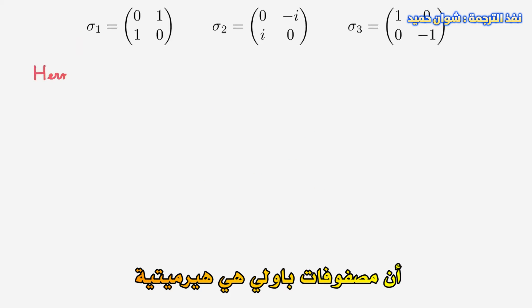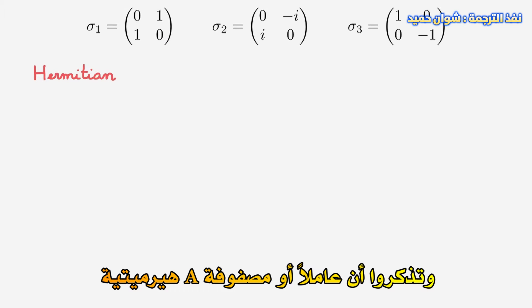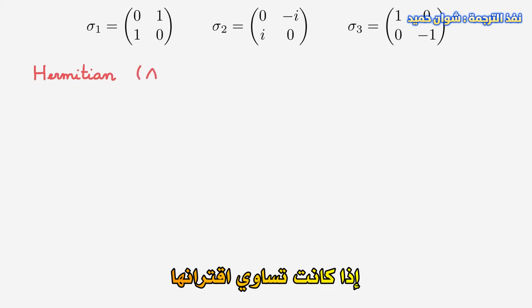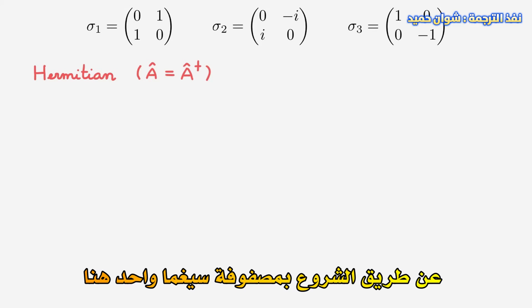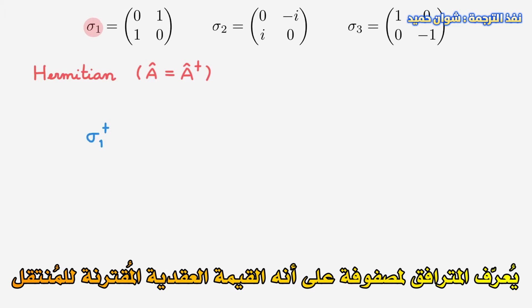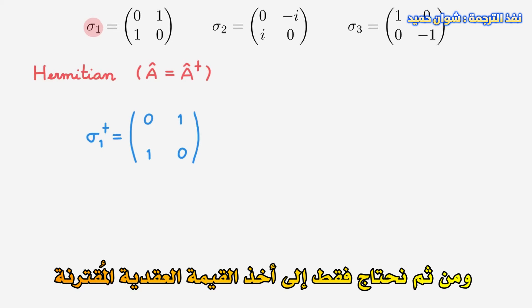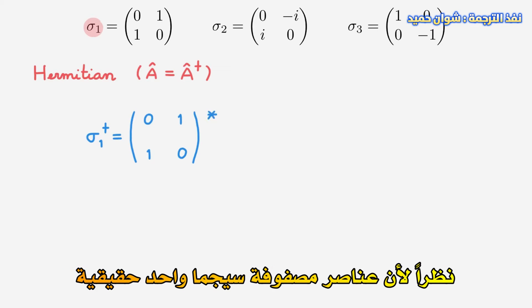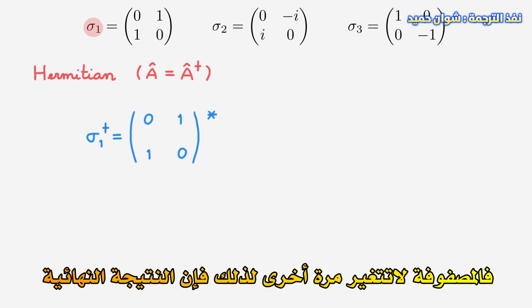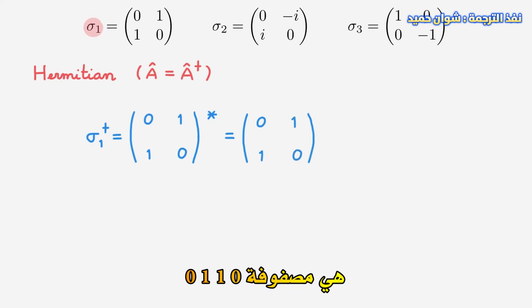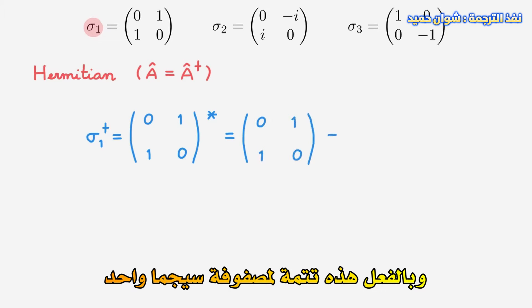The Pauli matrices are Hermitian, and remember that an operator or matrix A is Hermitian if it is equal to its adjoint. So let's confirm this explicitly by starting with the sigma-1 matrix. The adjoint of a matrix is defined as the complex conjugate of the transpose. In this case, the transpose is trivially the same, and then we just need to take the complex conjugate. As the entries of the sigma-1 matrix are real, the matrix is again unchanged, so the final result is the matrix [0,1; 1,0]. And indeed, this is equal to sigma-1.